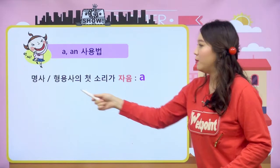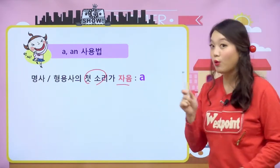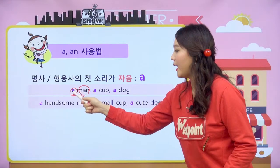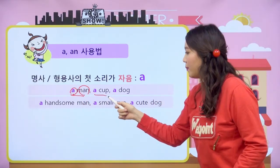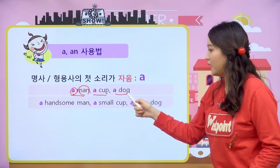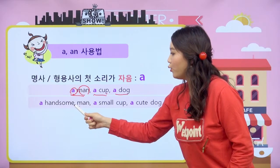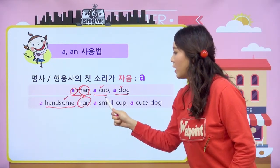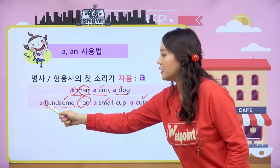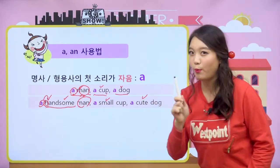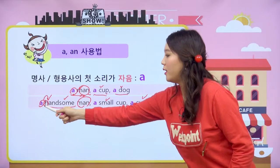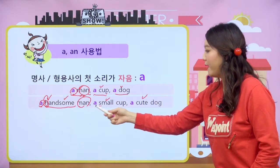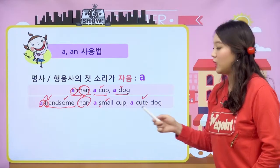a와 an은 우리 친구들 알듯이 명사나 형용사의 첫 소리가 자음일 경우 a가 옵니다. 예를 들면 a man 남자 한 명, a cup 컵 하나, a dog 강아지 한 마리. 그 다음에 형용사가 명사 앞에 왔을 경우에는 형용사의 첫 소리를 봅니다. 즉 a 바로 뒤에 오는 것의 첫 소리를 보면 돼요. a handsome man, a small cup, a cute dog 이렇게 되는 거예요.